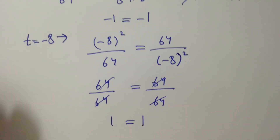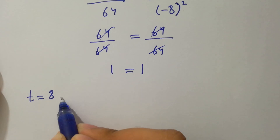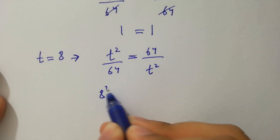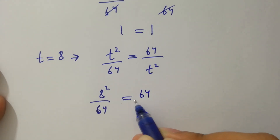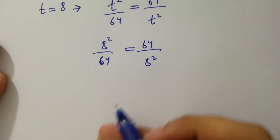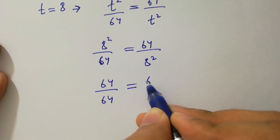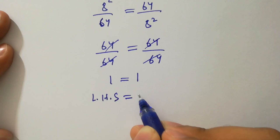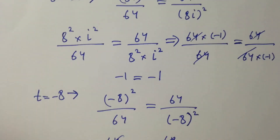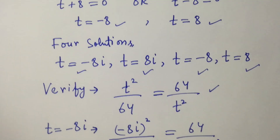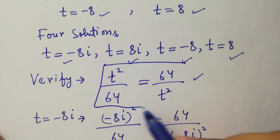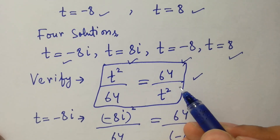For t equal to plus 8, we have 8 squared over 64 equal to 64 over 8 squared. Since 8 squared is 64, we get 64 over 64 equal to 64 over 64, and 64 cancels, giving 1 equal to 1. Left hand side equals right hand side, which shows that t equal to minus 8i, 8i, minus 8, and 8 all satisfy the equation t squared over 64 equal to 64 over t squared.